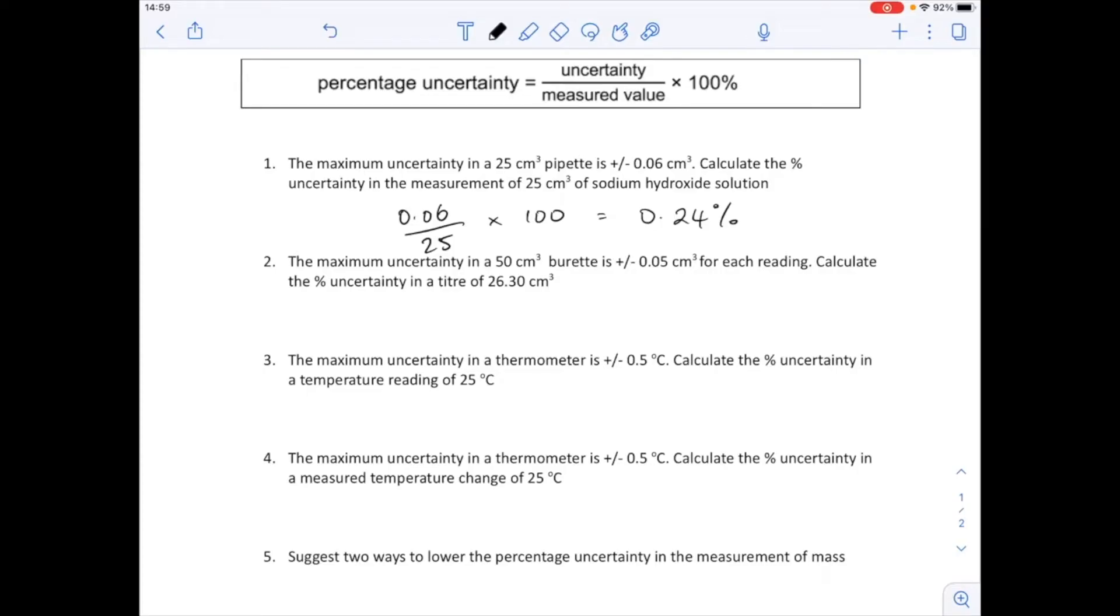Now the second one, there's a little bit of a catch in this one because it says for each reading, and the titration is based on two readings, your initial burette reading and your final burette reading. So in this calculation, we're going to have to double the error.